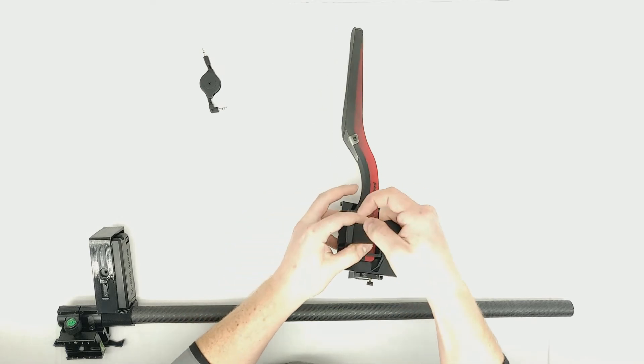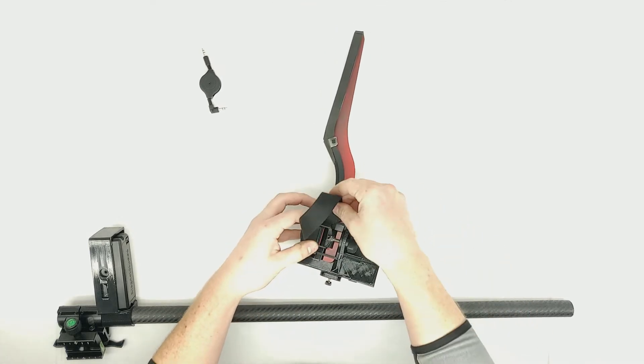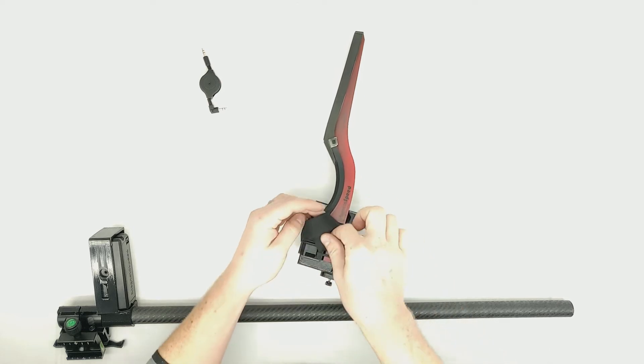Now, pull the slack out of the strap. Once the slack is out, you can wrap the tail of the strap around the buckle to tidy things up.